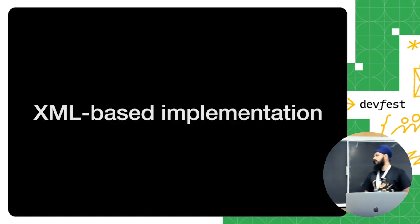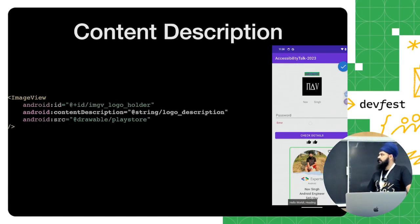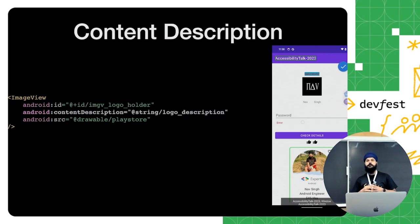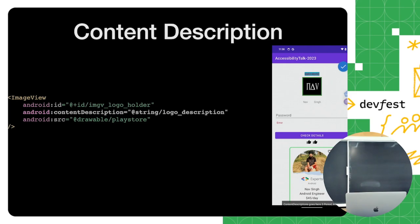Now we'll see XML-based implementation — how we can provide content labels, touch target size, color contrast, and similar things. The first is ImageView. Most of the time images are just decorative — for example, if I'm developing an app for company XY and we have their logo, we don't necessarily need to provide a content description. If we don't provide one, it will automatically be skipped by tools like TalkBack or screen reader. But in this case I've provided a description for the logo, and you can see TalkBack shows what that image is conveying.